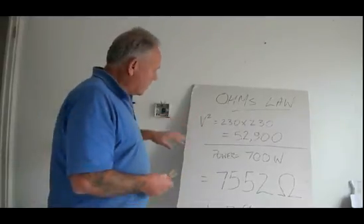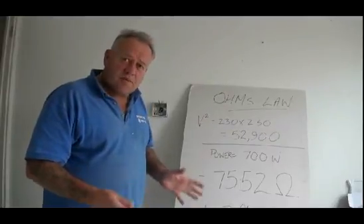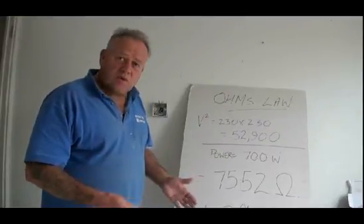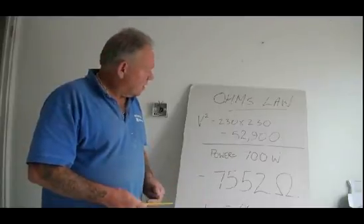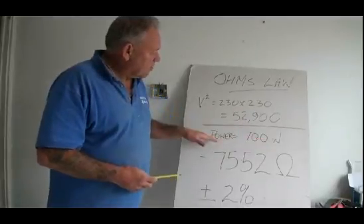In this situation, we have a 700 Watt heating mat. It's 100 Watt per square metre, on top of a wooden floor underneath ceramic tiles. So that is the power, 700 Watt.